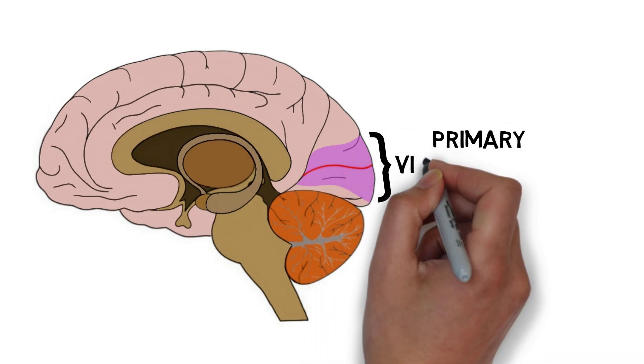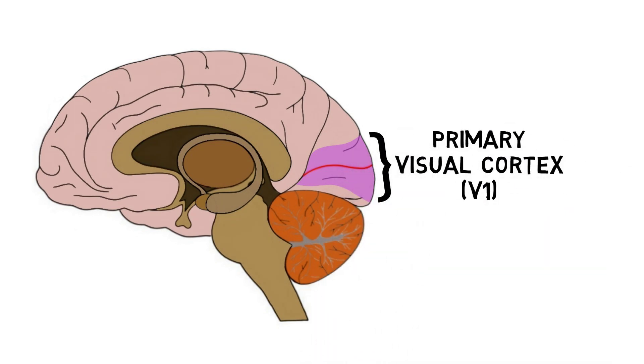The primary visual cortex, also known as V1, is a brain region that is critically important for the processing of visual information.